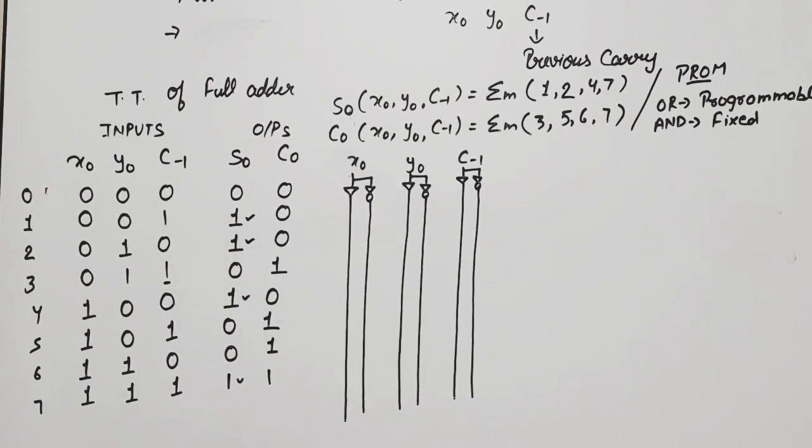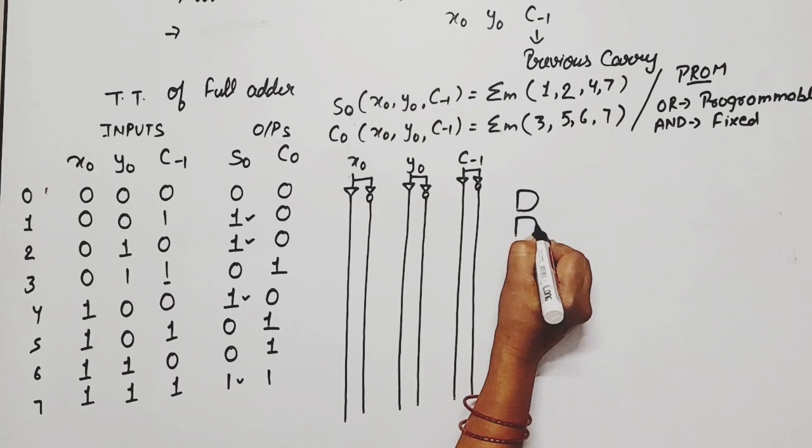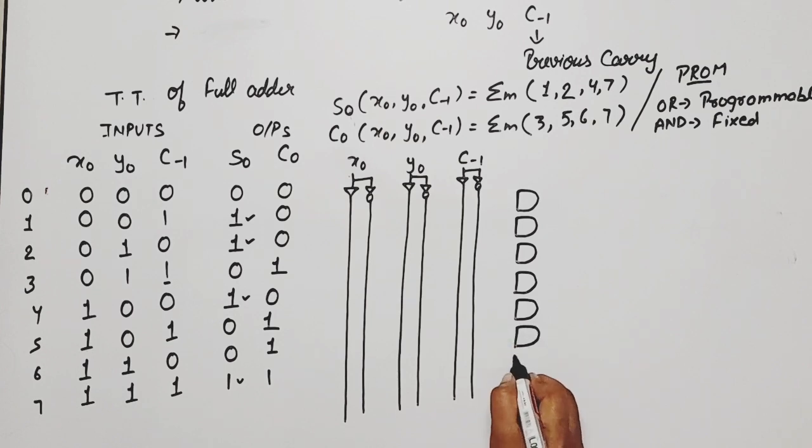Now 8 possible combinations means 8 possible addresses. So how many AND gates? 8. 1, 2, 3, 4, 5, 6, 7, and 8.